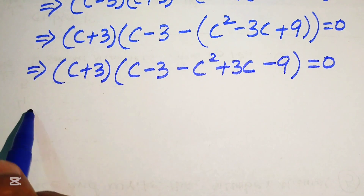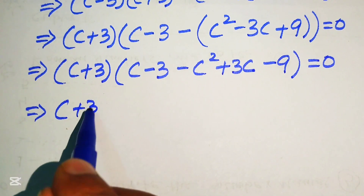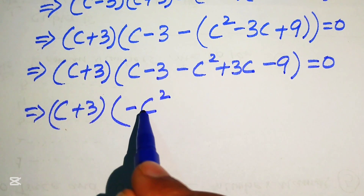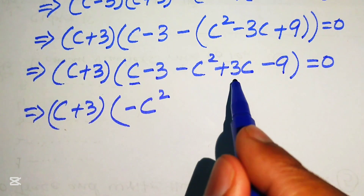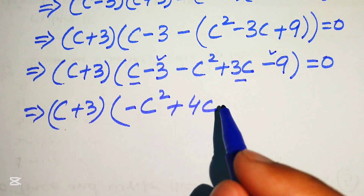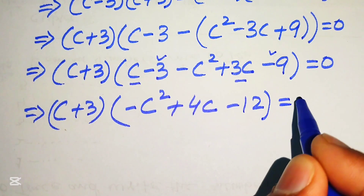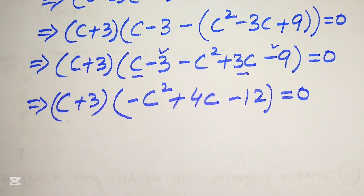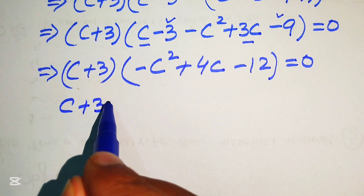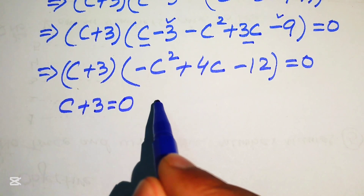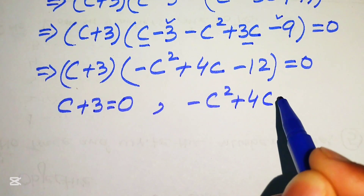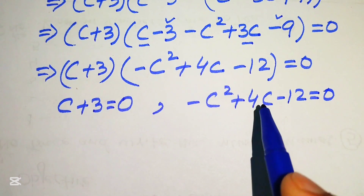Now we add the like terms inside the bracket. The squared term is minus c squared, the c terms: c plus 3c equals 4c, and the constants: minus 3 minus 9 equals minus 12. So we have (c plus 3)(minus c squared plus 4c minus 12) equals 0. We split this into two cases: Case 1 is c plus 3 equals 0, and Case 2 is minus c squared plus 4c minus 12 equals 0.